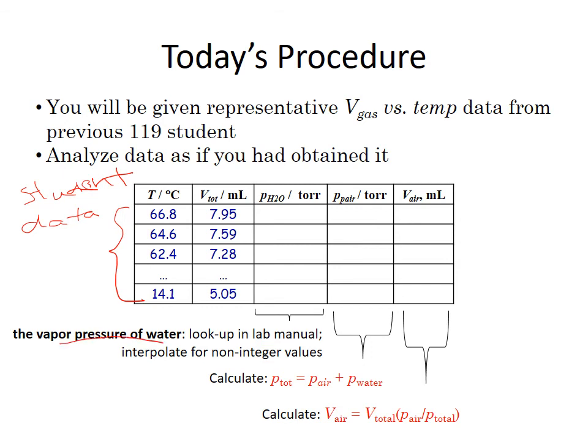The first is this partial pressure of water, the vapor pressure of water. This is a quantity that you can look up in the lab manual. One challenge that you're going to have to figure out is that these temperature measurements are in general made at non-integer values. So you'll see this is at 64.6 degrees, not 65. And what that means is you're going to have to interpolate for the non-integer values. If you're not sure how to do that, look in your lab manual. In the beginning of it, there are some directions on interpolating.